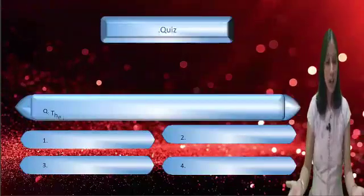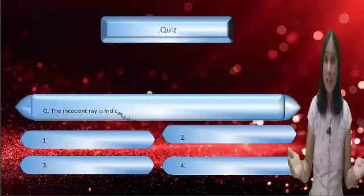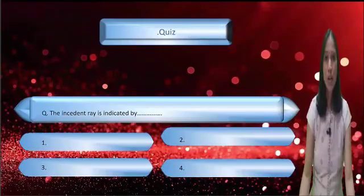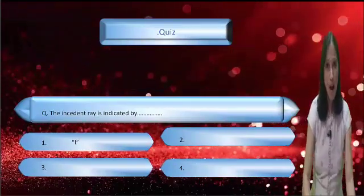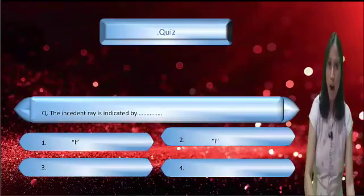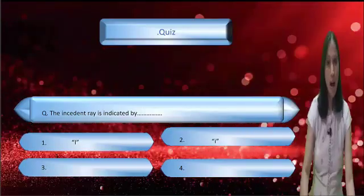Did you understand about reflection of light? Now let's check your understanding. The question is: the incident ray is indicated by — the options are capital I, small i, small r, capital R.